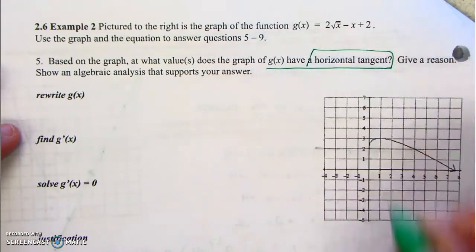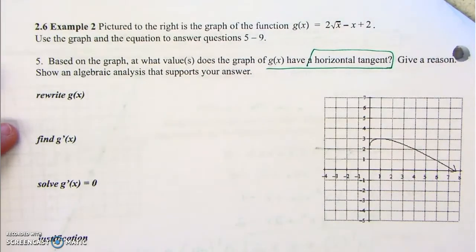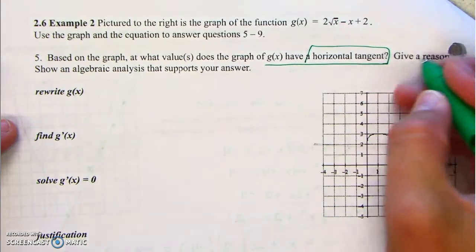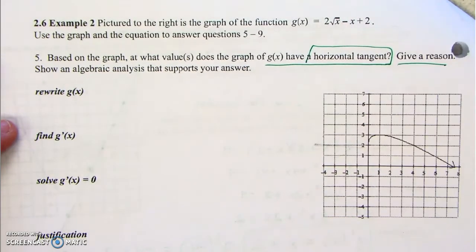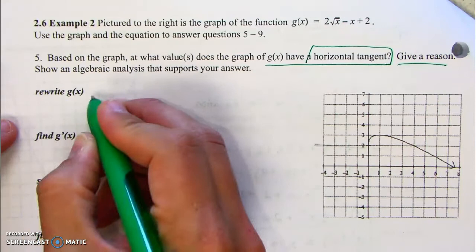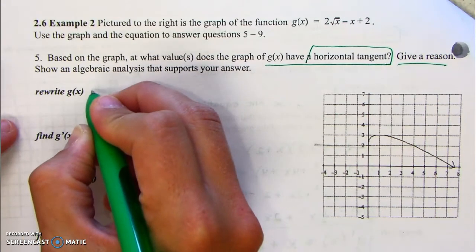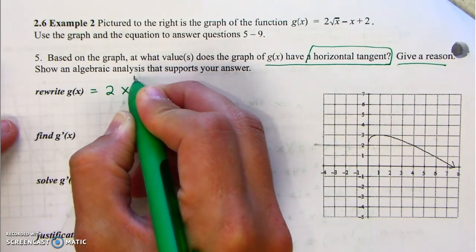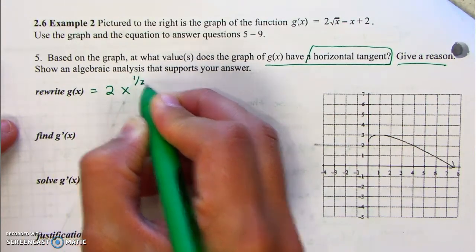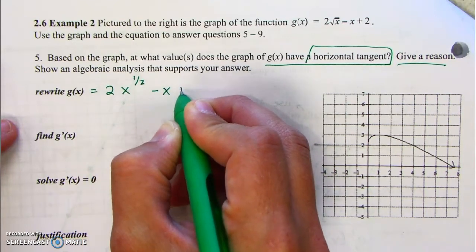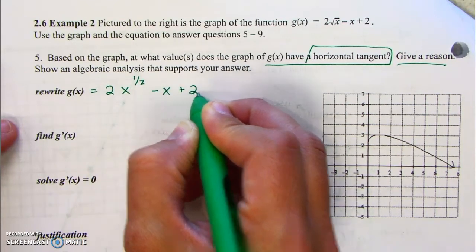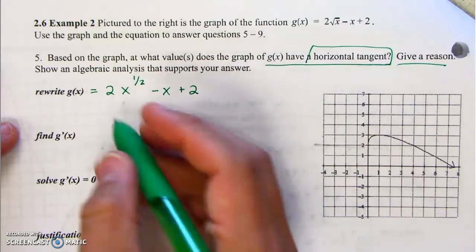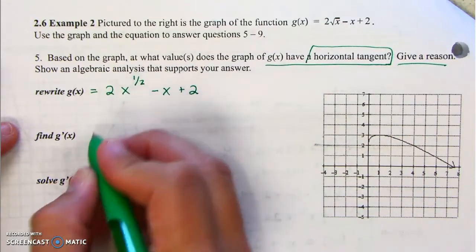Here's the key for this example — give a reason check. First, rewrite g of x. So g of x is equal to 2 times x to the 1 half. That's the square root. You either have the derivative memorized or you work through it step by step. I'm showing all the work.